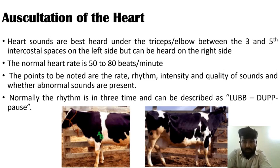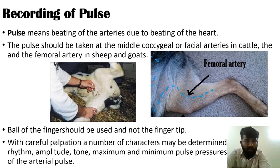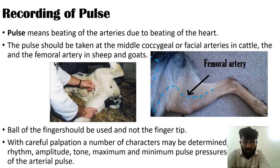Normally the rhythm is in 3-time and can be described as lub-dub-pause. Recording of Pulse. Pulse means the beating of the arteries due to the beating of the heart. The pulse should be taken at the middle coccygeal or facial arteries in cattle, and the femoral artery in sheep and goats. The ball of the finger should be used and not the fingertip. With careful palpation, a number of characters may be determined: rhythm, amplitude, tone, and maximum and minimum pulse pressures of the arterial pulse.